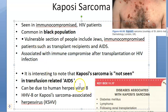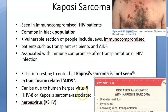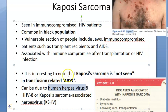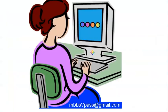One important point: Kaposi's sarcoma is not seen in transfusion-related AIDS. So if somebody got HIV from a blood transfusion, you will not see Kaposi's sarcoma in those people — which is interesting. Additionally, it can be caused by Human Herpes Virus 8, abbreviated HHV-8.